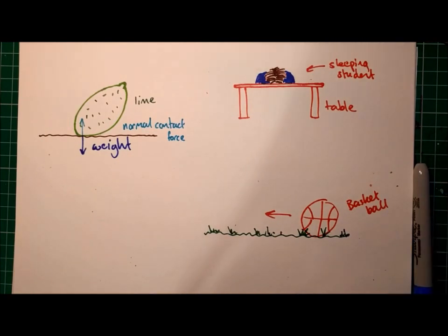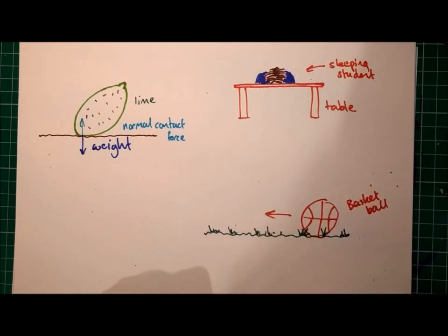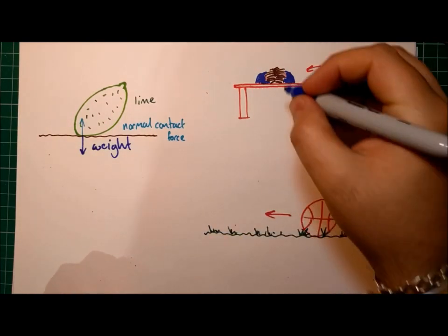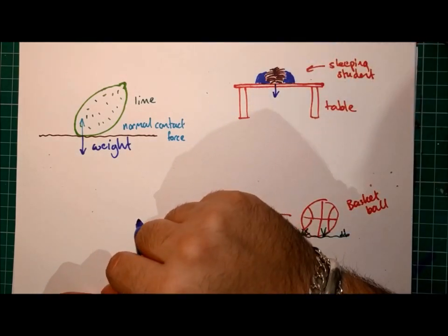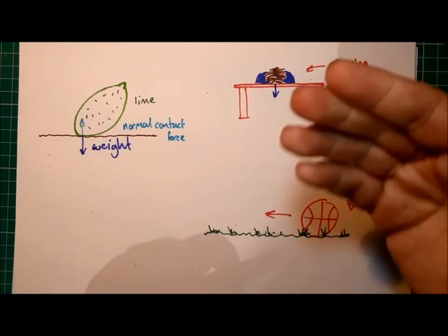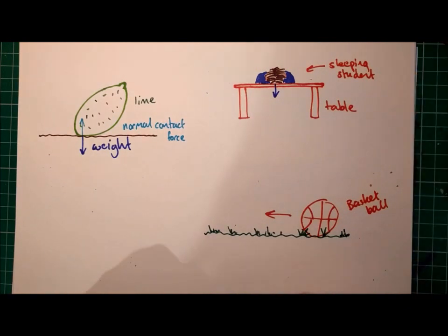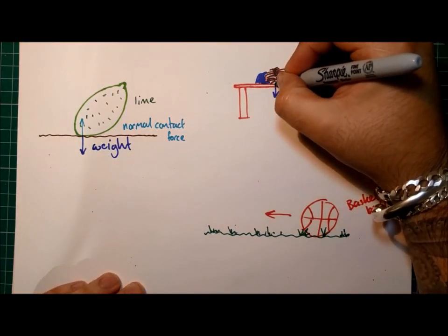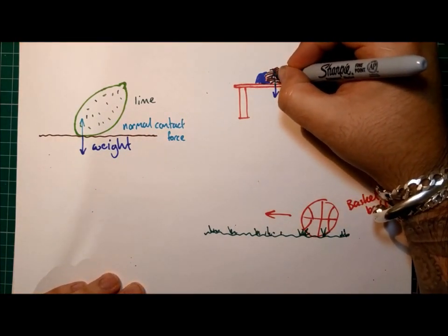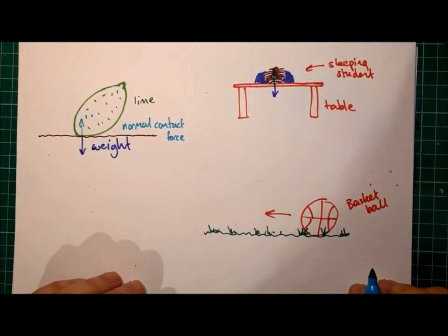In a similar stationary situation, we've got a sleeping student here on a desk. So the head of the student will have a weight acting on it, pulling it towards the ground. But this student's head is not moving and it's not accelerating towards the ground, because the table is applying an equal and opposite normal contact force, preventing the head from accelerating downwards.